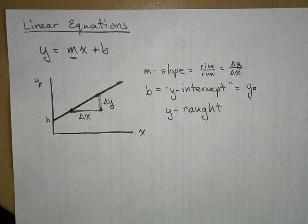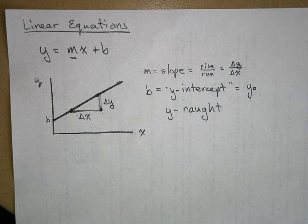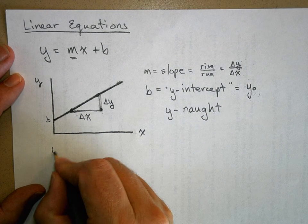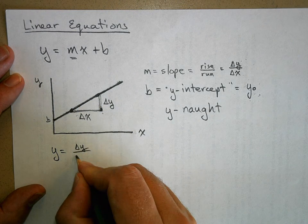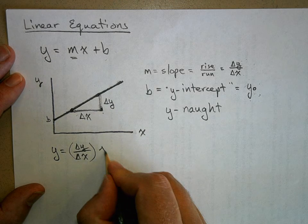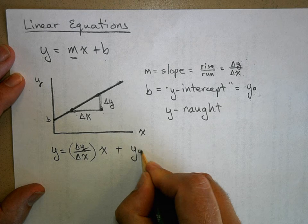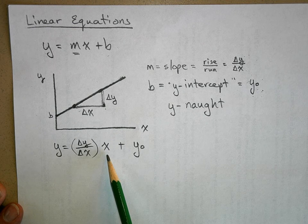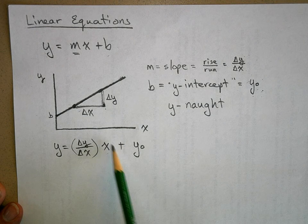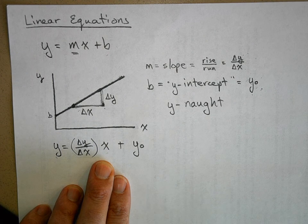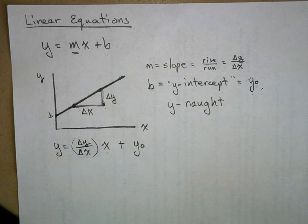So we can rewrite the equation as Y equals M, which is delta Y over delta X, times X, plus Y-naught. Does this make sense? If you plug in zero for X, this term goes away, and Y equals Y-naught — which is exactly where Y is when X equals zero.